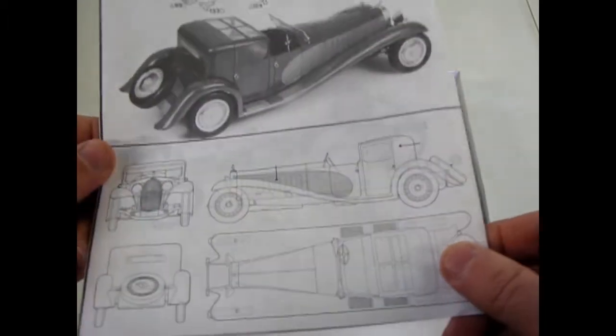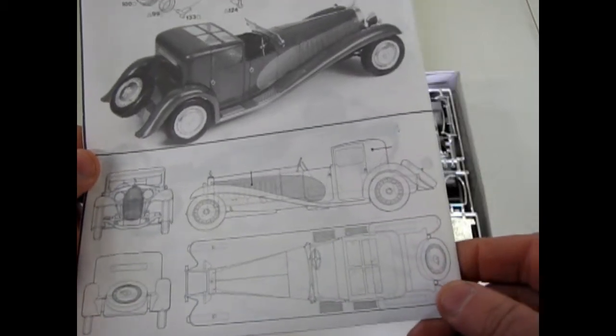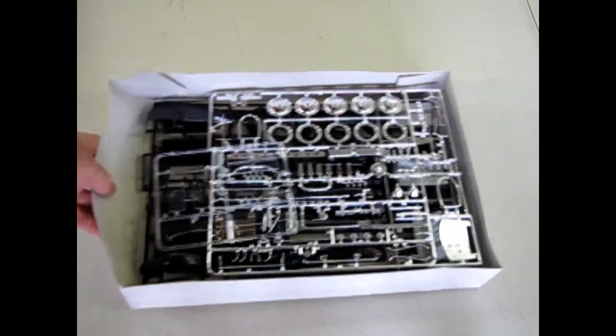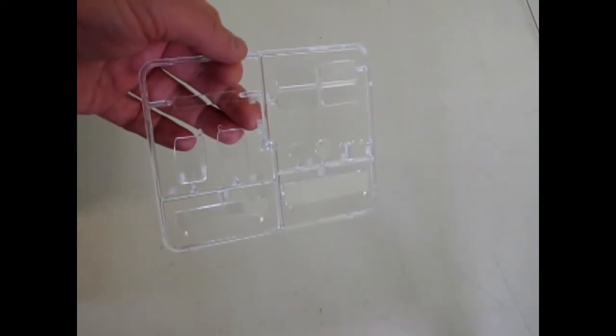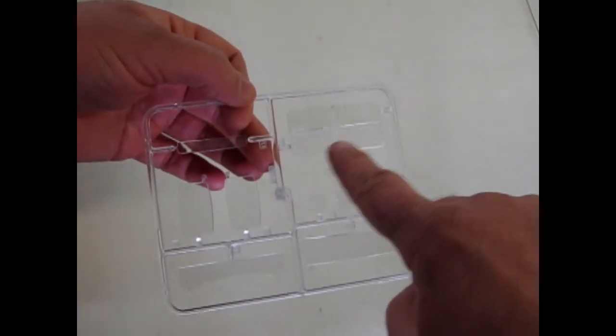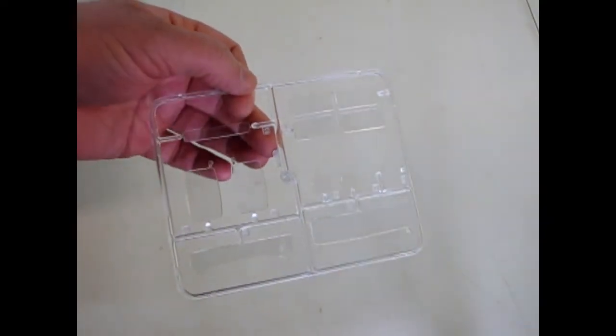Whereas the chauffeur gets the sun. So, if it ever rains, he gets soaking wet. But, hey, that was luxury back then, right? Okay. Now, we'll look at the nice clear glass windows, which include all the pieces, including that four-panel sunroof.